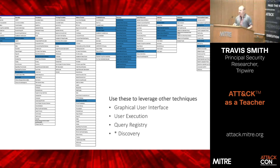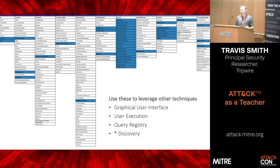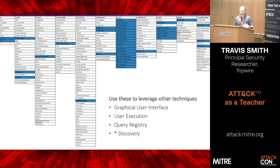The first level — the blue layer — consists of techniques where you're not really exploiting per se. You're using the graphical user interface or user execution to run code, creating registry entries, and really discovering things. These are techniques you're probably going to leverage more often as building blocks for other techniques.